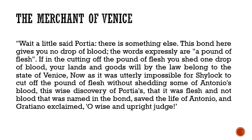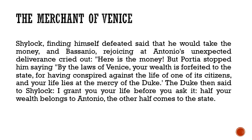Gratiano exclaimed, 'O wise and upright judge!' Finding himself defeated, Shylock now said he would take the money instead. Bassanio was happy and prepared to give it to him. But Portia stopped him, saying, 'By the laws of Venice, your wealth is forfeited to the state for having conspired against the life of one of its citizens, and your life lies at the mercy of the Duke.' Because Shylock had conspired to take the life of a citizen of Venice, his money and his life were now at the mercy of the Duke.